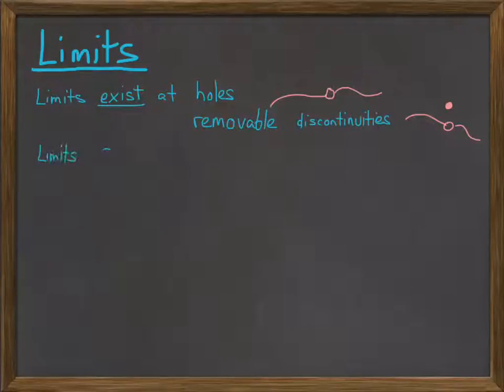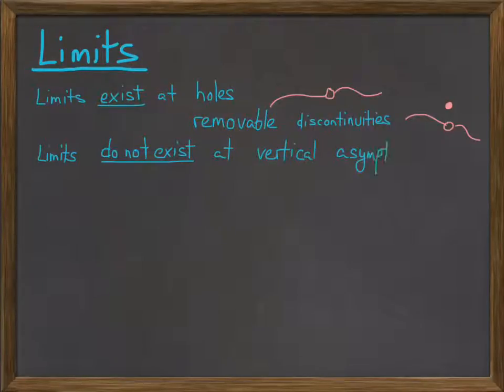Limits don't exist at vertical asymptotes, and we know what those look like. And the other one that people forget is limits don't exist at infinite oscillations.